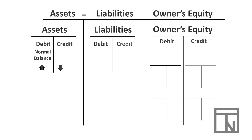Let's look at liabilities. Liabilities are on the right side of the accounting equation, so they would increase on the right or credit side and decrease on the opposite or debit side. Since credits are the increasing side, we would say that liabilities have a credit normal balance.